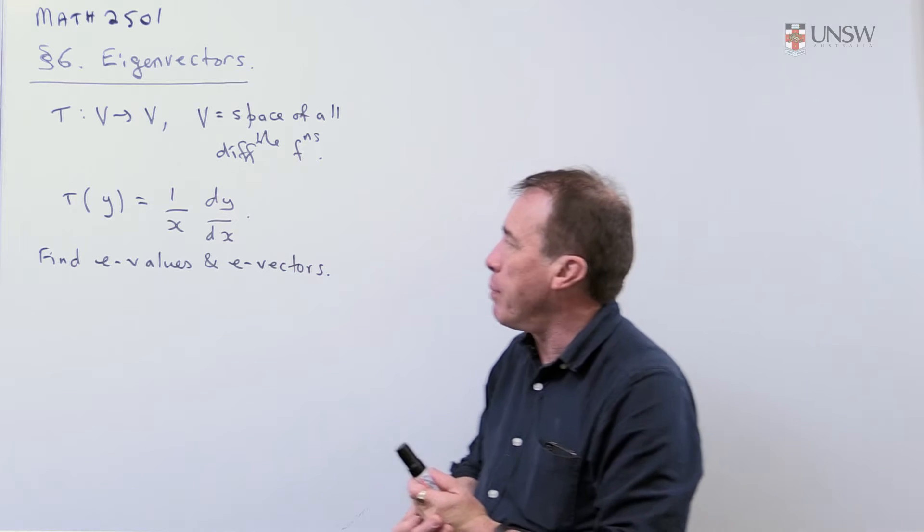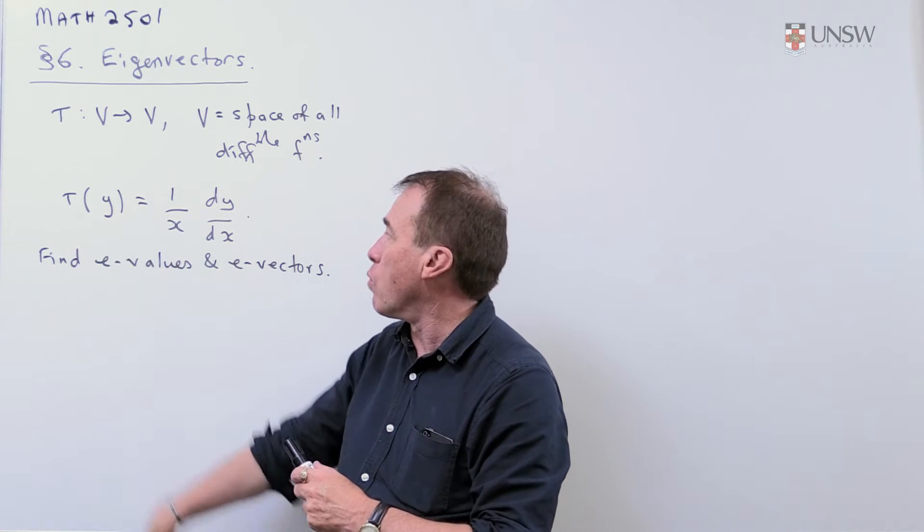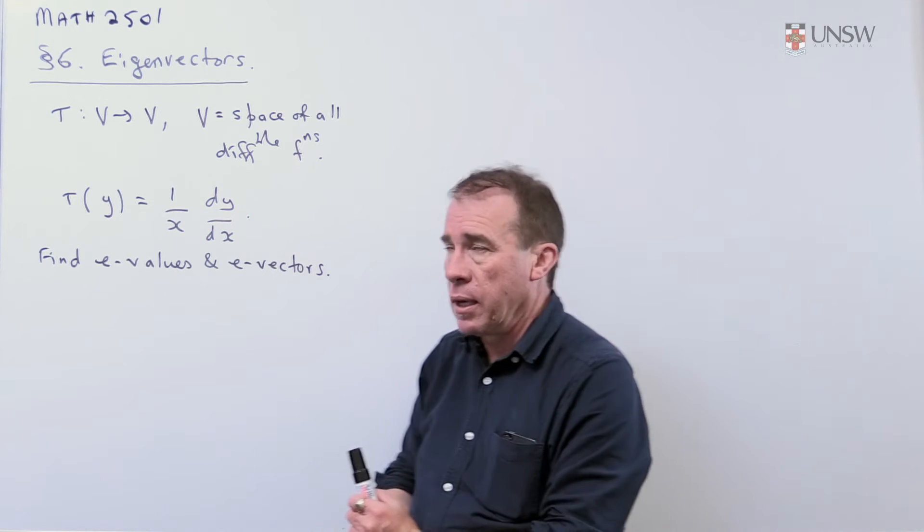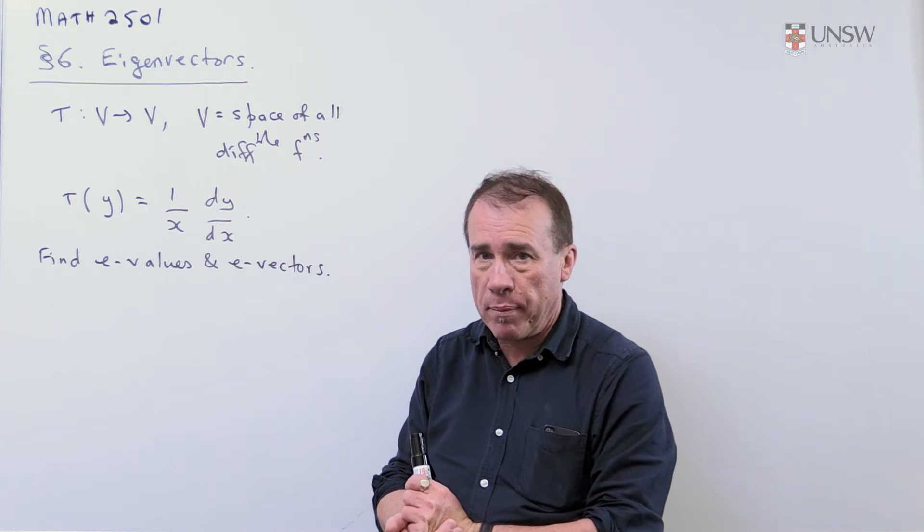We have a map T which takes a function, a differentiable function y, and maps it to 1/x dy/dx. I'll leave you to check, as a little exercise, that T is in fact a linear map.